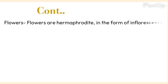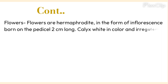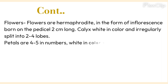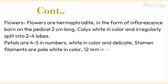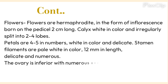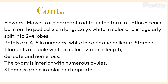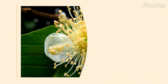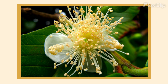Flowers: flowers are hermaphrodite, in the form of inflorescence born on a peduncle 2 centimeters long. Calyx is white in color and irregularly split into 2–4 lobes. Petals are 4–5 in number, white in color and delicate. Stamen filaments are pale white in color, 12 mm in length, delicate and numerous. The ovary is inferior with numerous ovules. Stigma is green in color and capitate.